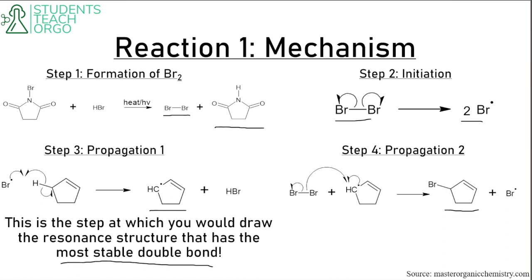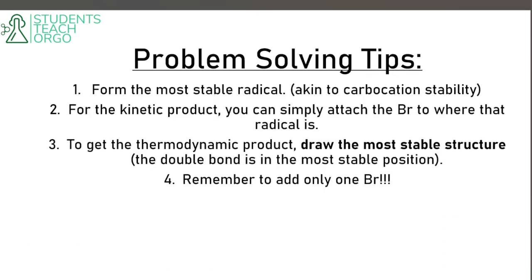Let's go over some problem-solving tips. First, form the most stable radical — it's the same as carbocation stability; the most stable radical equals the most stable carbocation. For the kinetic product, bromine attaches directly to where the radical is. For the thermodynamic product, you draw the most stable double bond position. Remember to add only one bromine total.